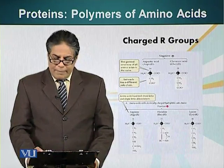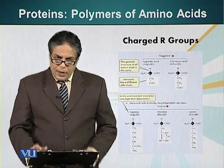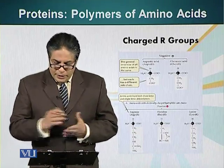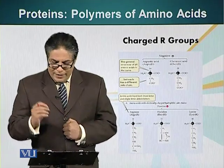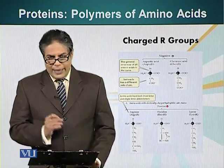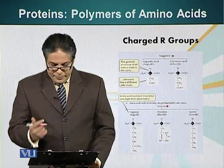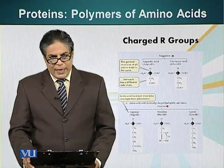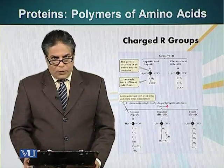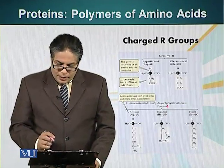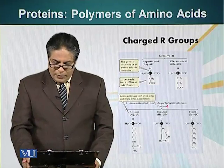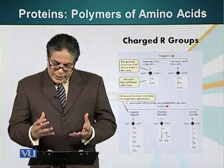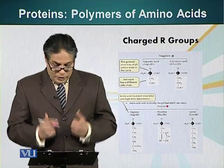The first group is amino acids which have charged groups. There are two types of charges: positive charge and negative charge. Two amino acids — aspartic acid and glutamic acid — have a negatively charged molecule attached in the form of an R group, because of a carboxyl group. The other group is positively charged amino acids, with three amino acids whose R groups carry a positive charge.